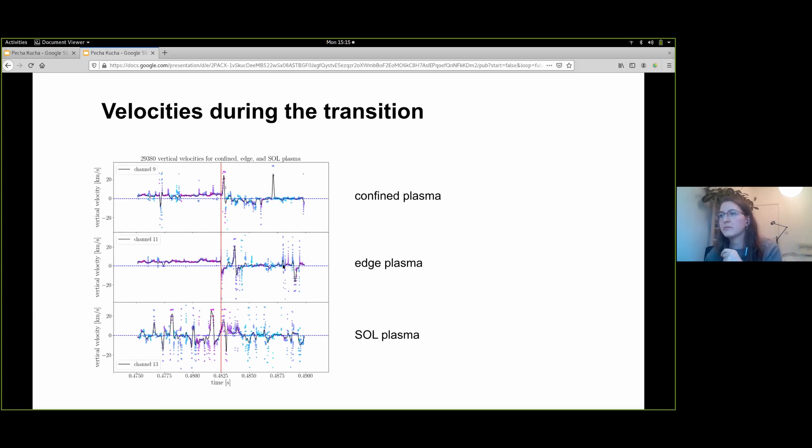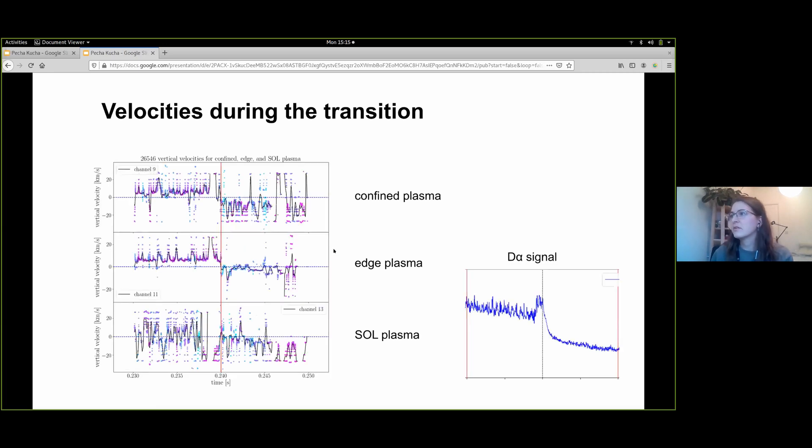A typical result shows a noticeable velocity shift between L and H mode, strongest seen and best seen in the edge, which is the region of most interest. In the confined plasma, generally the turbulence is lower, and the scrape-off layer is dominated by filaments, so stable velocities can be seen.